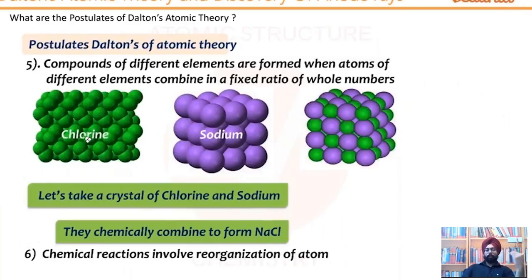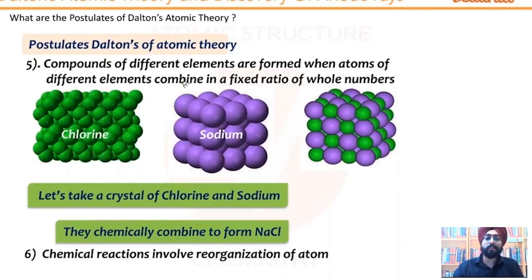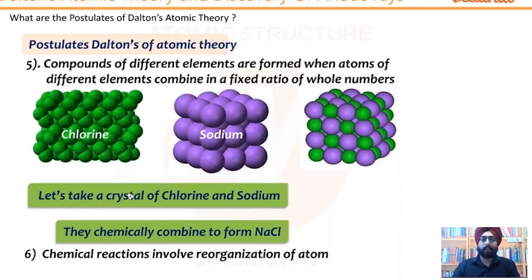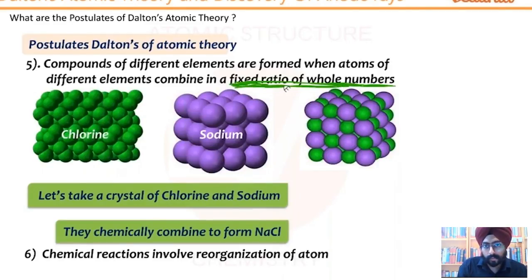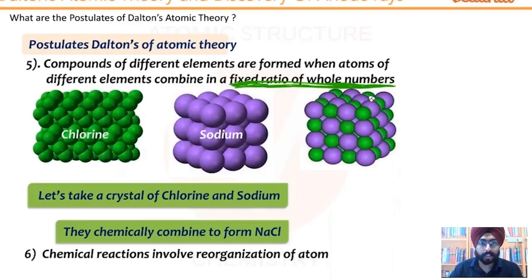Now let's see what the next postulate of Dalton's atomic theory is. This postulate says that compounds of different elements are formed when atoms of different elements combine in a fixed ratio of whole numbers. So ultimately, what Dalton is trying to say is this fixed ratio of whole numbers.